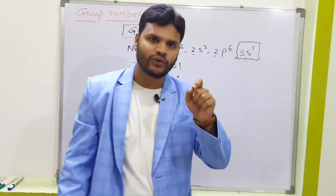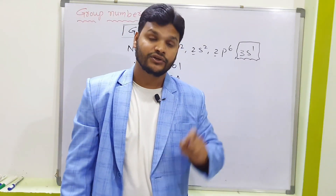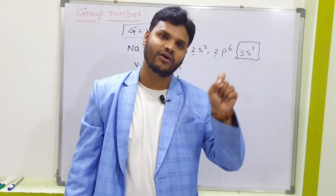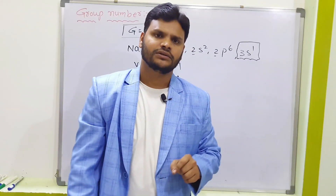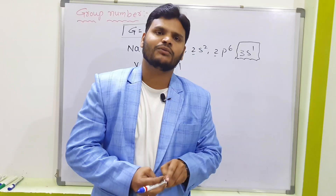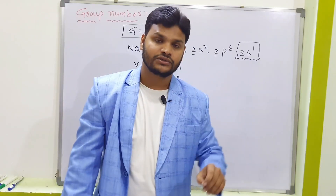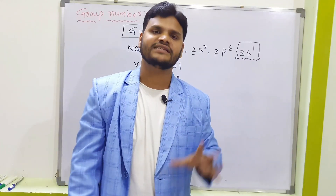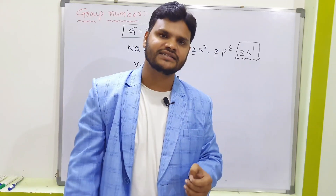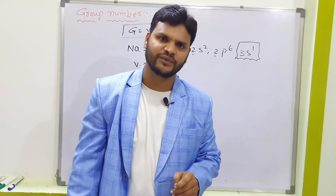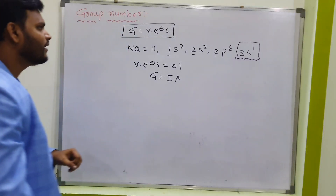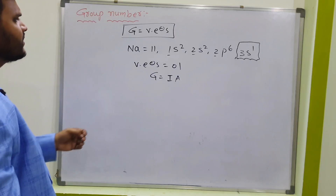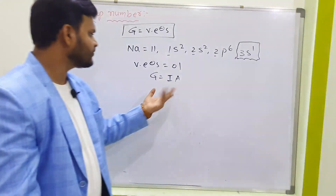To learn how to write electronic configuration, you can go through my channel — I have uploaded a video on that topic. Based on Moeller's diagram, we can write electronic configurations, and every chemistry student must learn this as a basic concept. Sodium contains only one valency electron, which is why it belongs to Group 1.